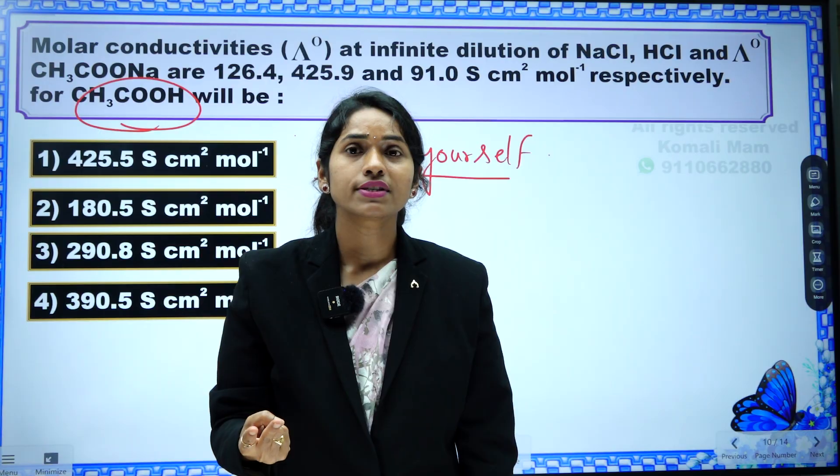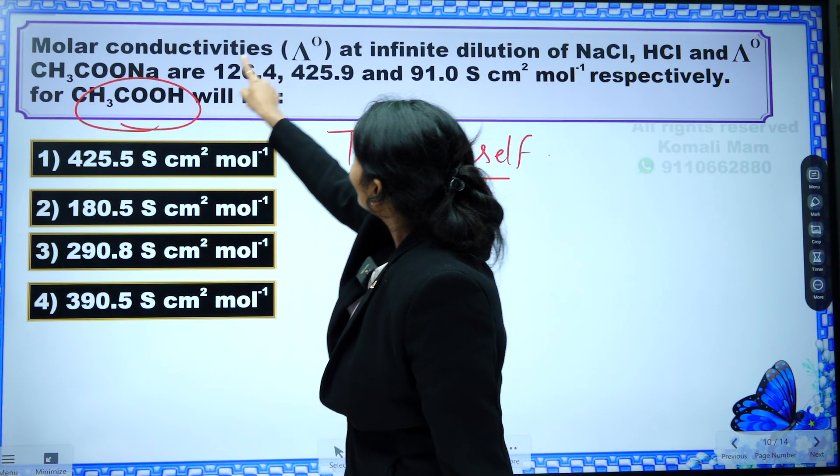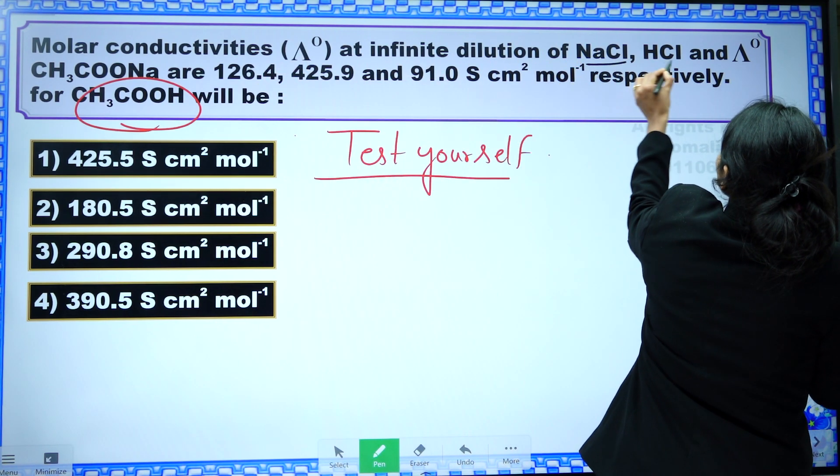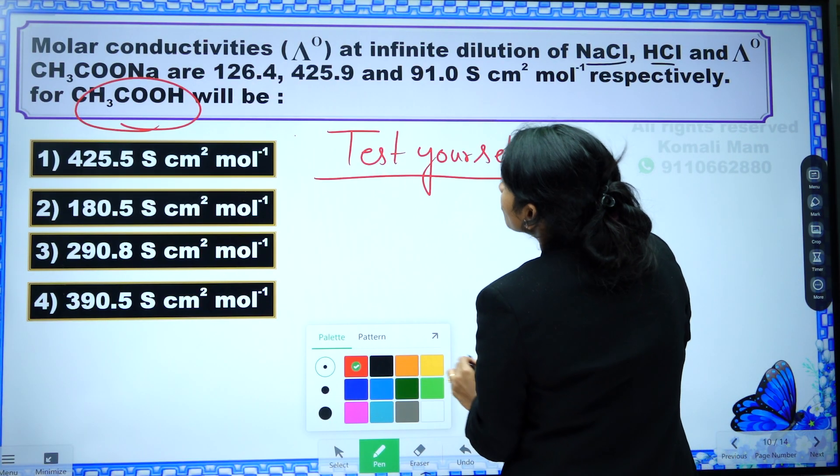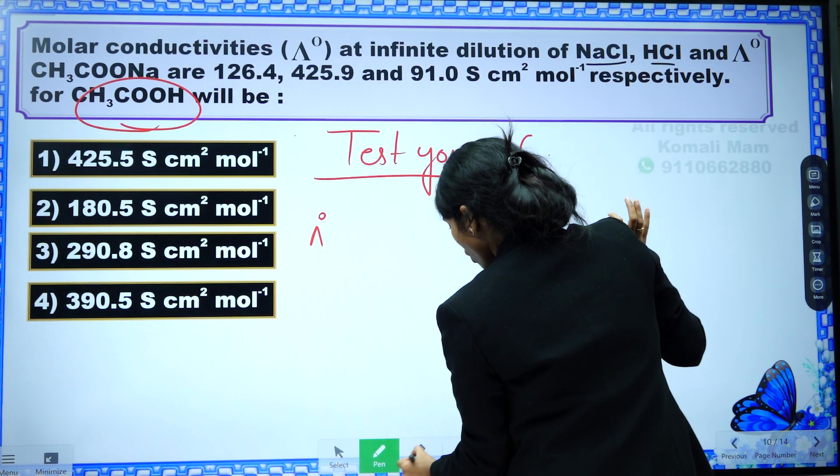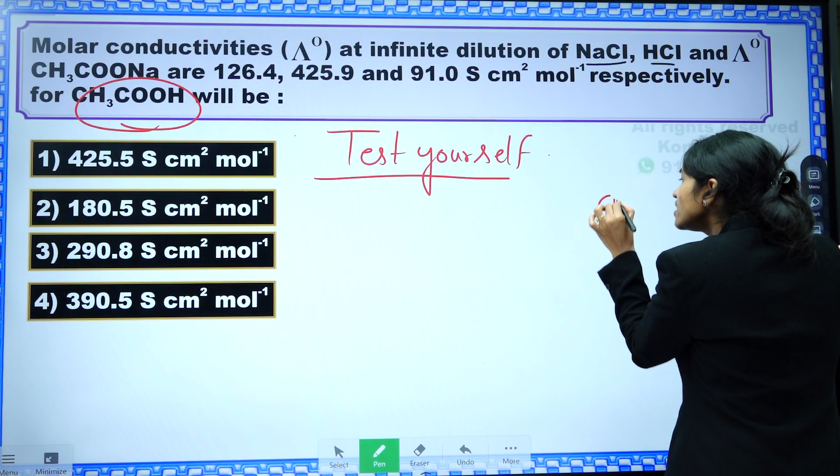Let us see what are those two questions and what is the solution. Molar conductivity at infinite dilution of NaCl, HCl and sodium acetate is given and they were asking us for acetic acid. See acetic acid they were asking, okay, acetic acid they were asked.